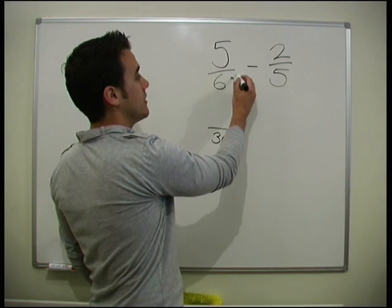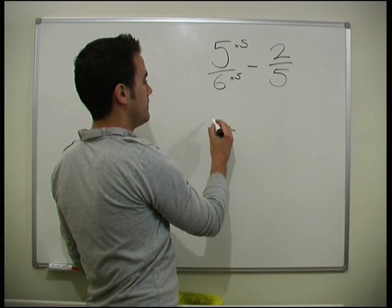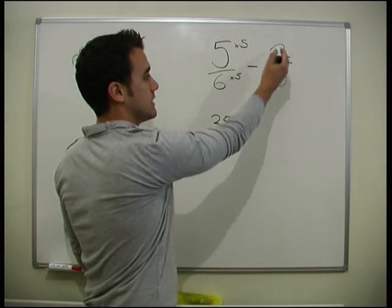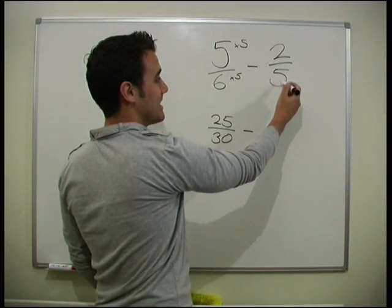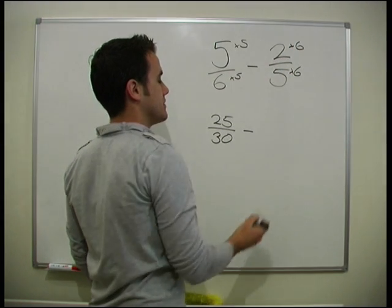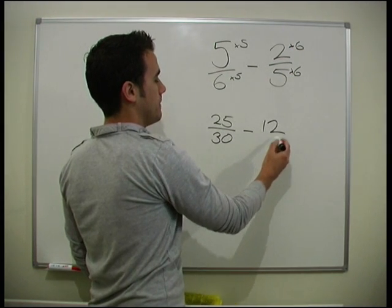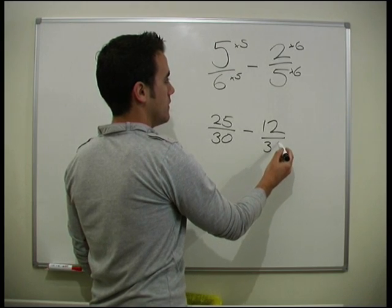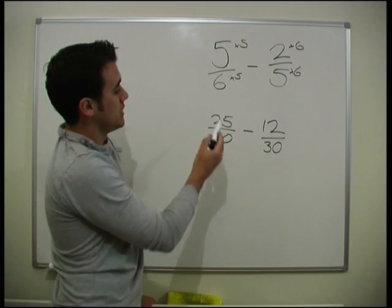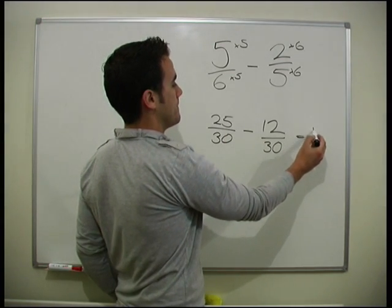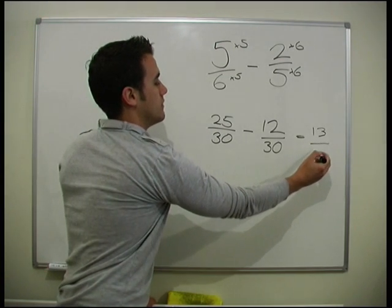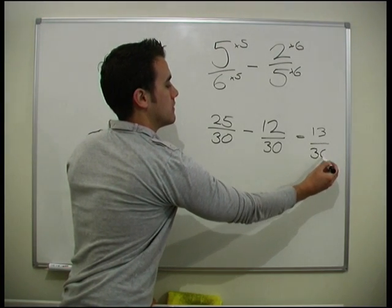How do I get that there? I times it by 5. So times this by 5. So I actually get 25 over 30. Take away 2 over 5. How do I get back to 30? I times it by 6. So I can times the top number by 6 as well. So I get 12 over 30. So I'll just take the two top numbers away from each other. 25 minus 12 gives us 13 over 30.